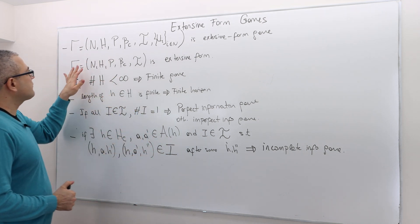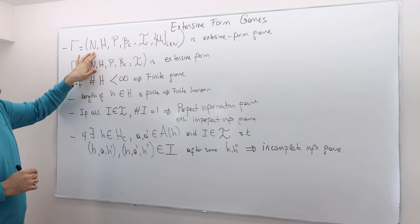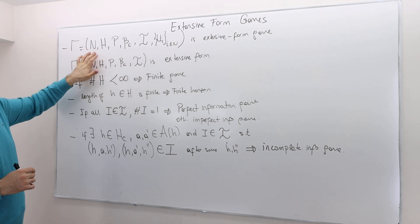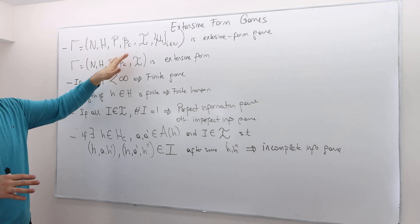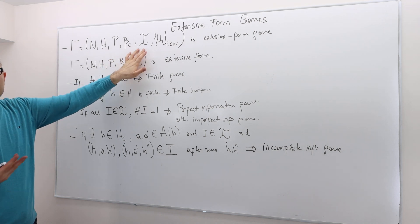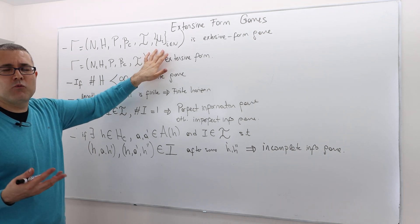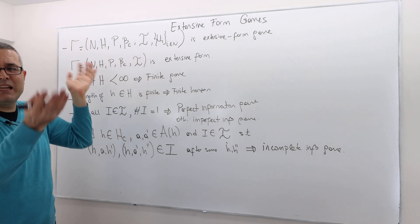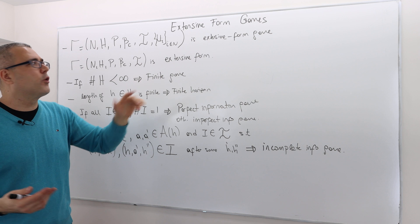If the extensive form game has those five ingredients — N the set of players, H the set of histories, P the player function, beta_c the chance probability distribution, I the information partition, and the von Neumann-Morgenstern utility function for every player — we collect all of those ingredients and call it an extensive form game.